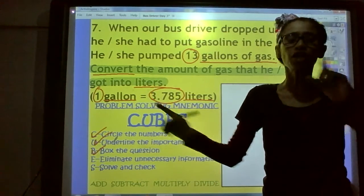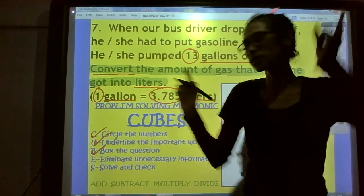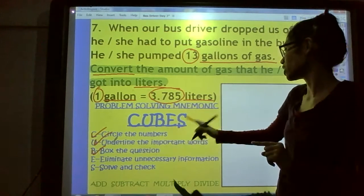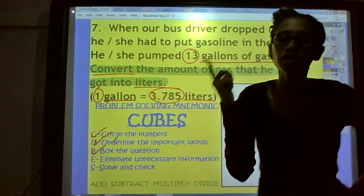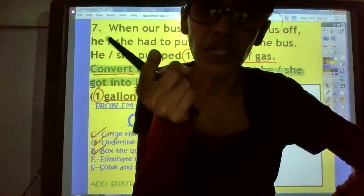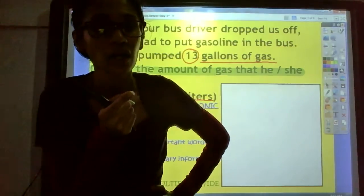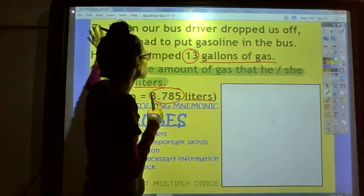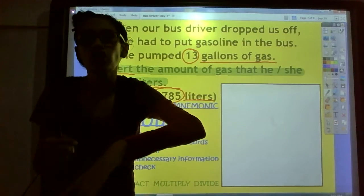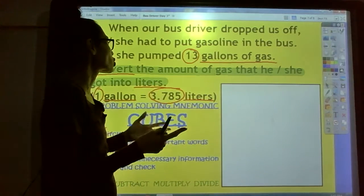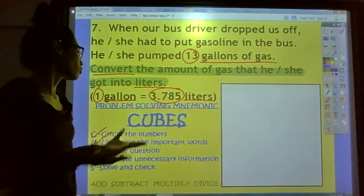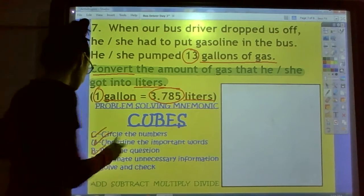The next step in our CUBES is the E step. It says to eliminate unnecessary information. So, look at the problem. Is there anything in the problem trying to trick you? All these words right here. It's like extra words. We probably don't need that. We need to make sure that we have the 13 gallons and convert. So, we're done with that step.